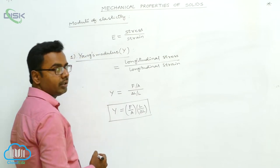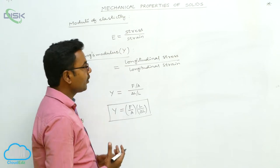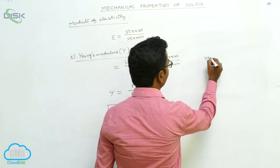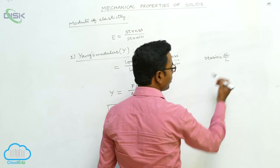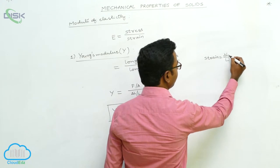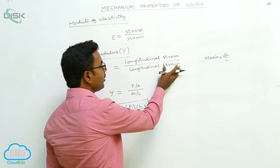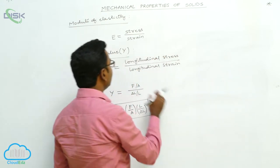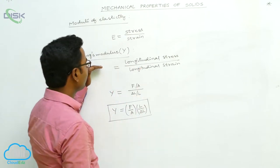The units of Young's Modulus are the same as the units of stress, because strain has no units. Strain is equal to change in dimension by original dimension — change in length by original length — so the units cancel out. Strain has no units and no dimensions, so the units and dimensions of Young's Modulus are the same as those of stress.